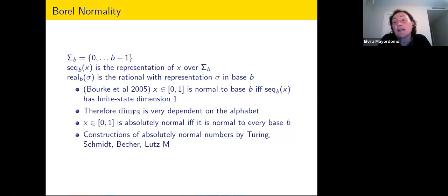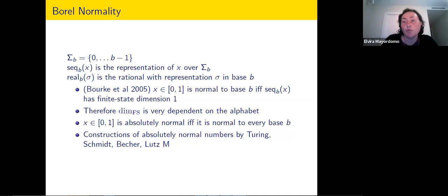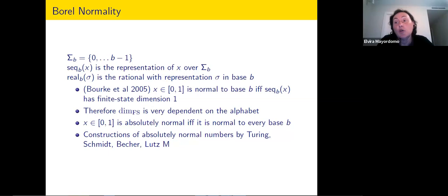For a while, these concepts were one of the main motivations to study finite state dimension — meaning that finite state dimension was very connected to number theory in that sense, to concepts related to Borel normality and to the idea of sequences and block entropy. But if you go back to other definitions of effective dimension, we are more interested in looking at points in Euclidean space in a more geometrical way.